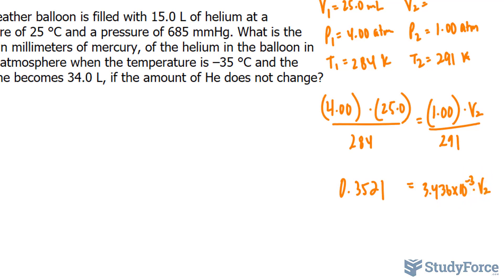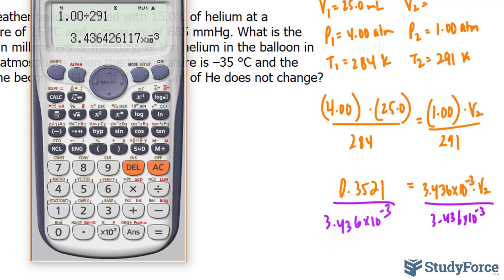I'll divide both sides by this factor. That way I can isolate for V₂. So 3.436 times 10 to the power of negative 3 on both sides. And now we can use our calculator.